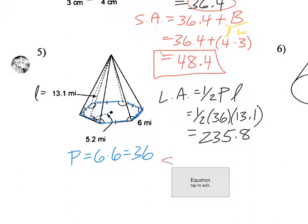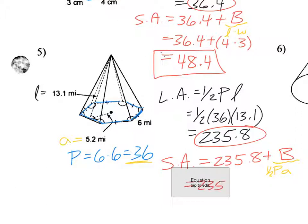Now I get surface area, which is that number. Plus big B. Big B here again, that's a regular polygon. So I'm using the 1/2 PA. So the perimeter here again is that. The apothem is this number right here. So I've got 235.8 plus 1/2 times 36 times the 5.2. So type all that in on the calculator. Add that to the 235.8. And I get 329.4.